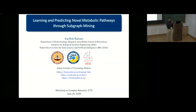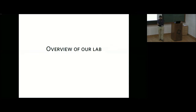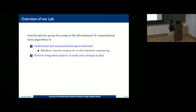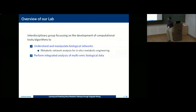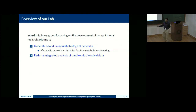We went about predicting pathways, which is a very common problem. We are an interdisciplinary group focusing on the development of algorithms, especially to understand and manipulate biological networks, with emphasis on metabolic networks. The key application we envisage is metabolic engineering — we come up with strategies to overproduce different kinds of compounds like vitamin E or hyaluronic acid using strategies from computational modeling. We also do integrated analysis of multi-omic data.